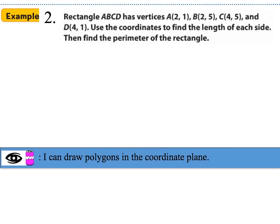Example 2: Rectangle ABCD has vertices point A (2,1), point B (2,5), point C (4,5), and point D (4,1). Use the coordinates to find the length of each side, then find the perimeter. Unlike the last problem, we're not given a coordinate plane, so we'll figure out the distance between each vertex using coordinates.